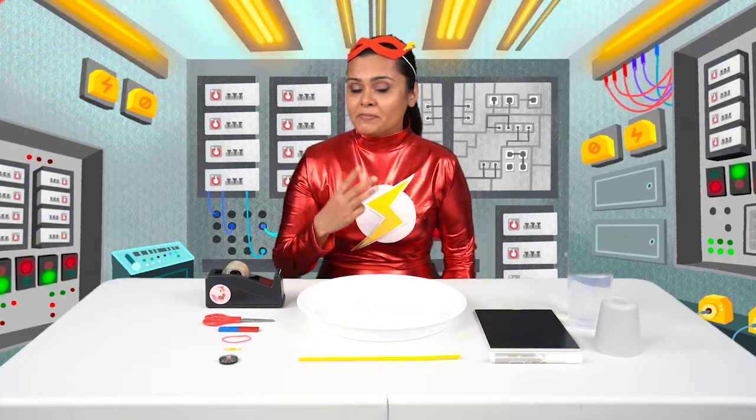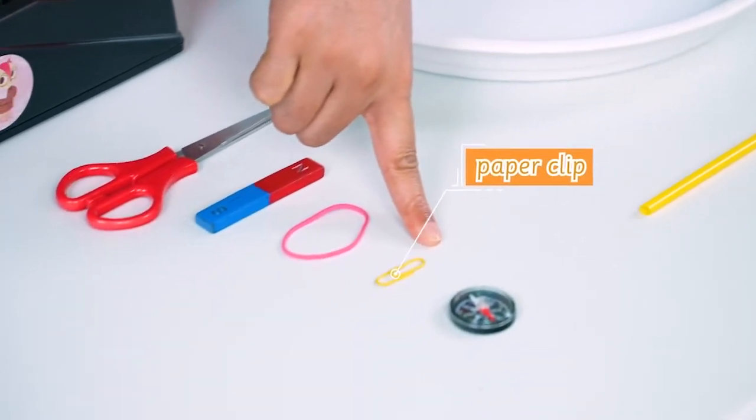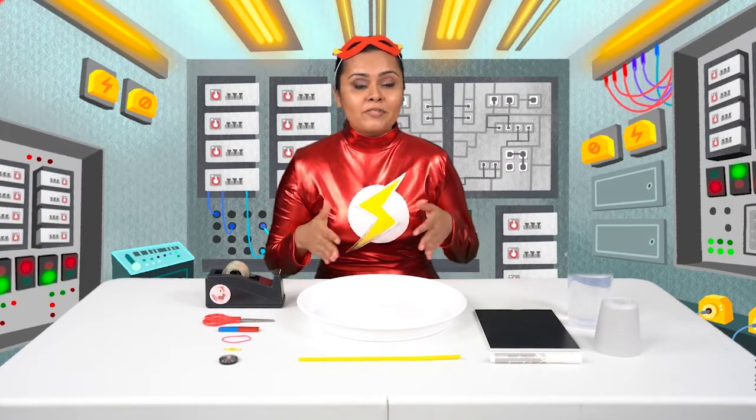So today we have three items. A plastic straw, a paper clip made of iron, and a rubber band. So we'll see which of these items can be magnetized and become a compass!